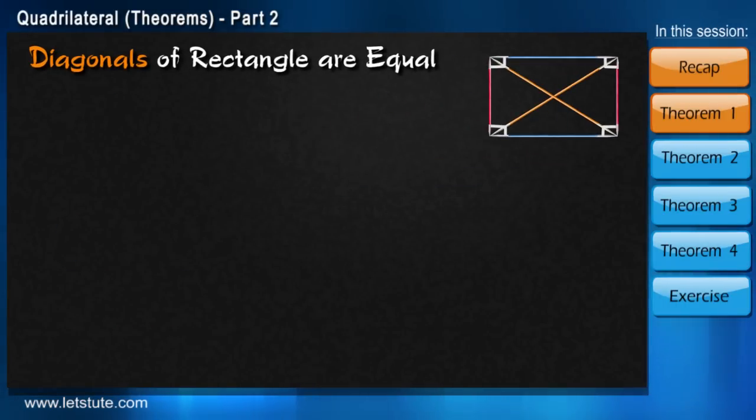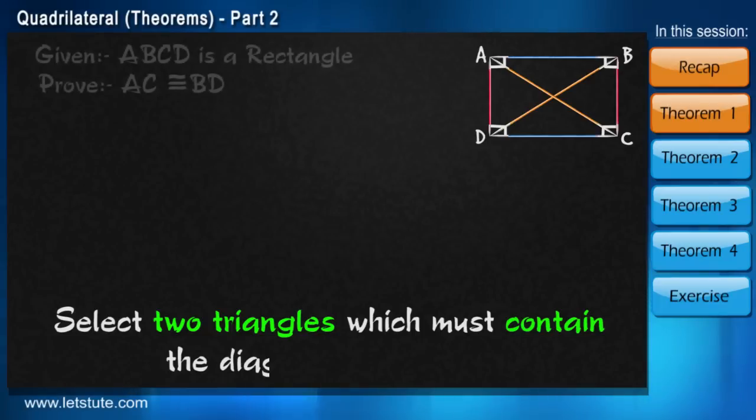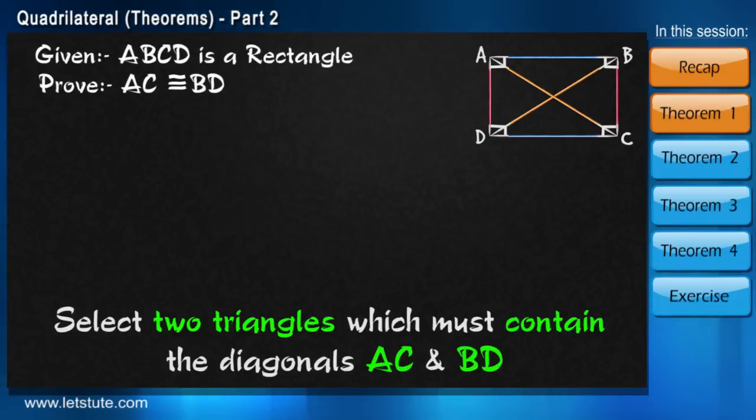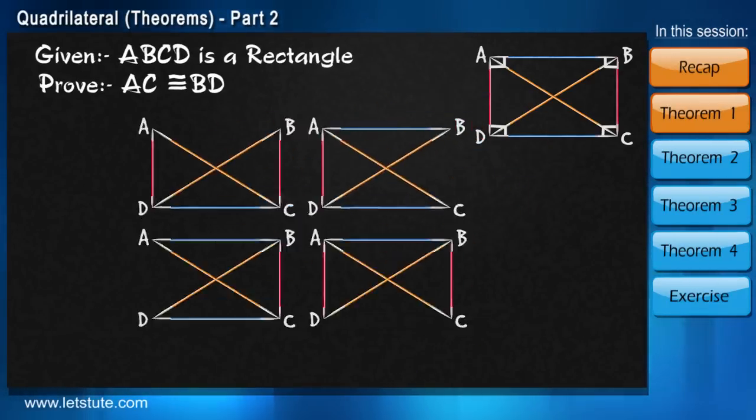So here we name this as A, B, C and D. The next step would be to select two triangles which will contain the two diagonals AC and BD. And the triangles could be any out of these four combinations.